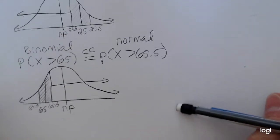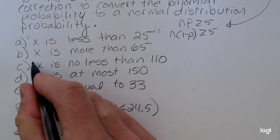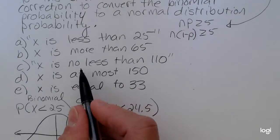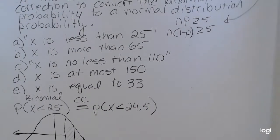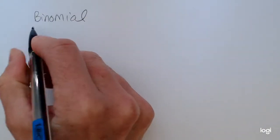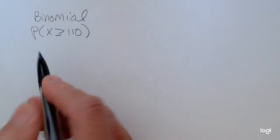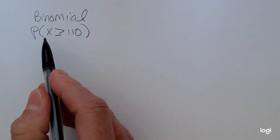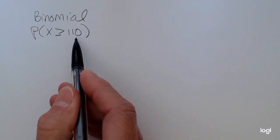The next one — the wording is a little tricky. X is no less than 10. In other words, x cannot be less than 10, but it can be equal to 10. As a binomial expression in terms of probability, that's going to be x is greater than or equal to 10. No less than 10 is the same as greater than or equal to 10. That's also saying at least 10.